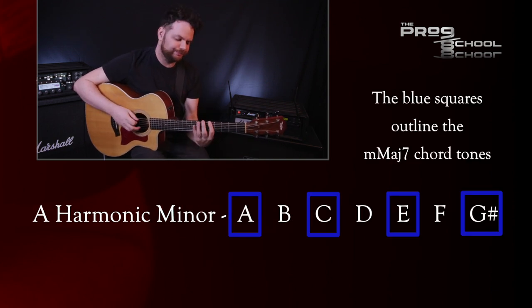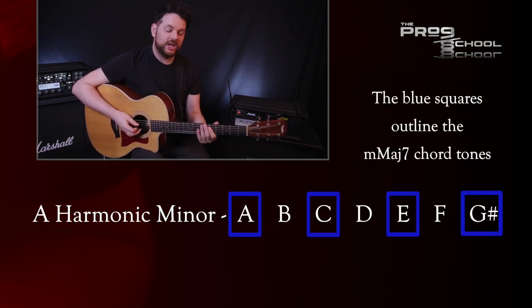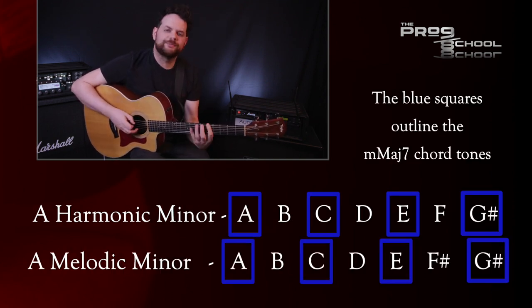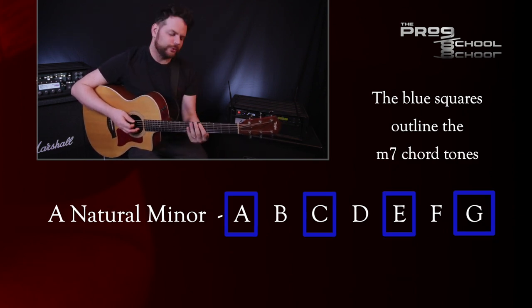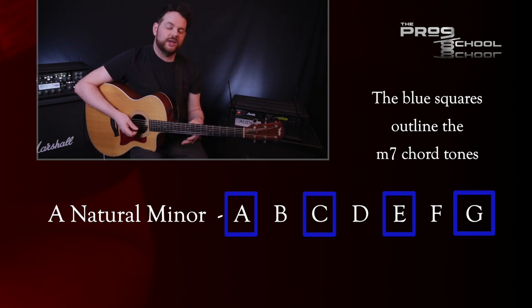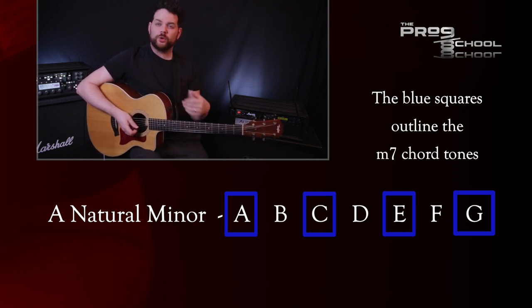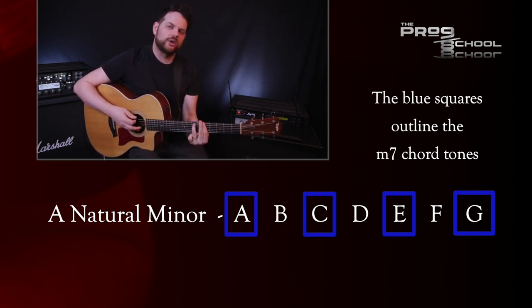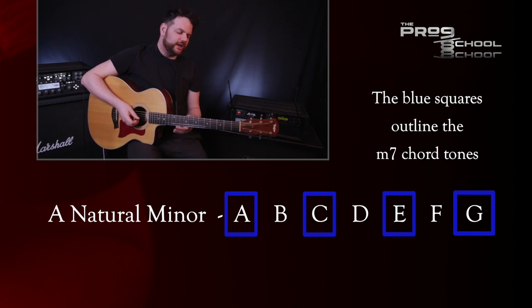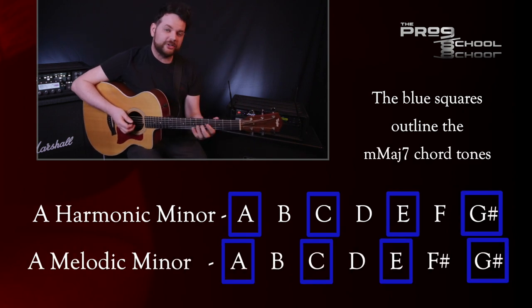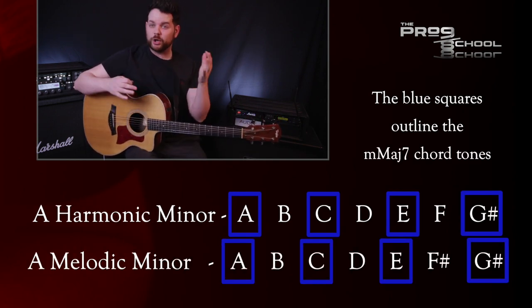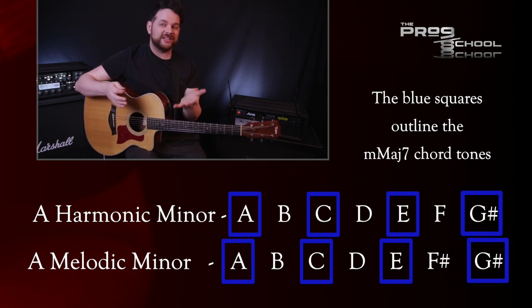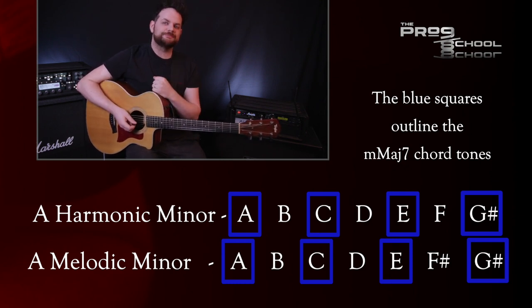Here's harmonic minor, and melodic minor. The natural minor scale has a minor seventh interval and therefore would have a normal minor seventh chord built off of its root note. But with the minor major seventh chord, I personally usually think of harmonic minor — and it's probably because I spent a lot of years learning Yngwie Malmsteen licks.